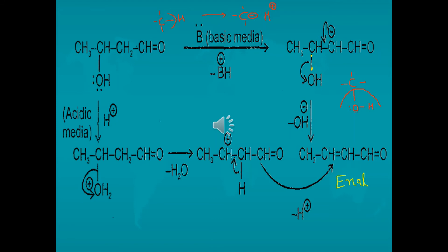In acidic medium, H+ attacks OH to form OH2+, which leaves to form a carbocation C+. The adjacent CH2 then removes one hydrogen, and the leftover electrons form a pi bond — giving us the enal from the acidic medium as well.